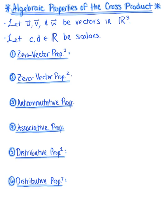Here we are looking at the algebraic properties of the cross product. To begin, let's let vector u, v, and w be three vectors in R3, and let c and d be any scalars.